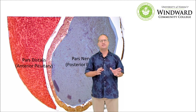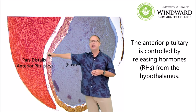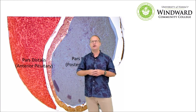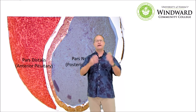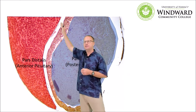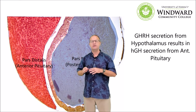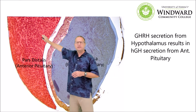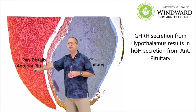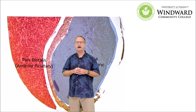The pars distalis, or anterior pituitary, is controlled by the hypothalamus through the secretion of releasing hormones. For example, if we want to produce growth hormone from our anterior pituitary, the message would first come from the hypothalamus as growth hormone releasing hormone. Once that growth hormone releasing hormone travels to the anterior pituitary, the anterior pituitary would then release growth hormone, which would have effects on various organs of the body.